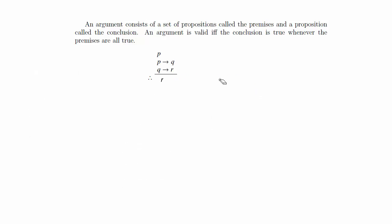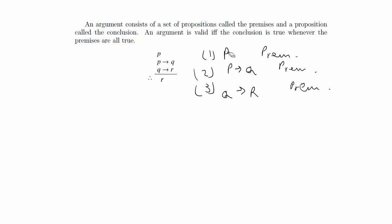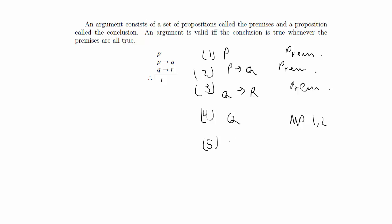Let's do a simple derivation. Our premises are: p, p implies q, and q implies r. Since p is true and p implies q, by modus ponens from lines 1 and 2 we can derive q. Then since q is true and q implies r, by modus ponens from lines 3 and 4 we can derive r — which is the conclusion we wanted. This is the basic format for how you do a derivation.